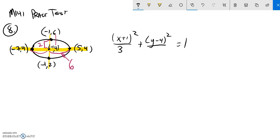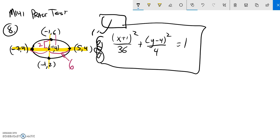So, this should be a 6 squared down here, a 36. My offset in the y direction is 2. 2 squared is 4. There's my equation right there.